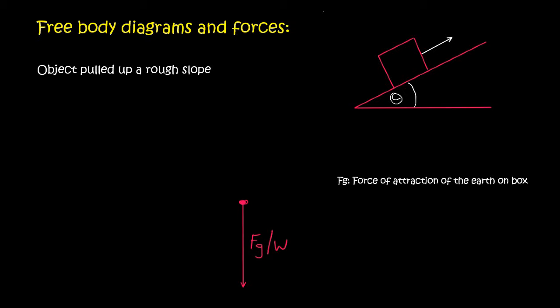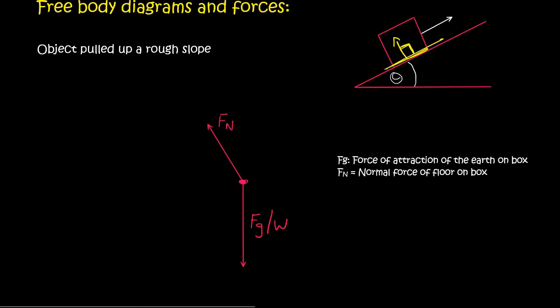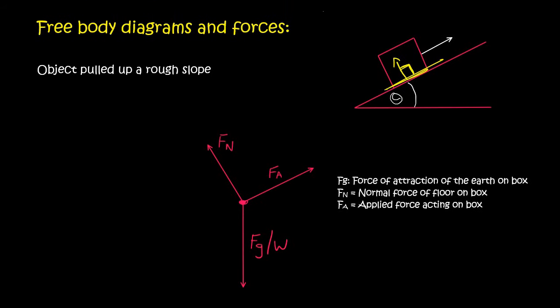Then we've got the normal force, which always acts at 90 degrees to the surface. And so if your surface is like this, then remember 90 degrees is like that. So that there's an angle of 90 degrees. Then we've got the applied force. And then lastly, we have the force of friction.